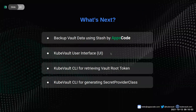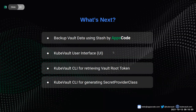For the roadmap, we want to back up vault data using Stash by AppsCode. We're also working on the KubeVault user interface. We want to enable an archival CLI for retrieving the vault root token — it can be tedious to decrypt it from cloud providers. We also want to enable an archival CLI to generate the Secret Provider Class for greater user convenience.